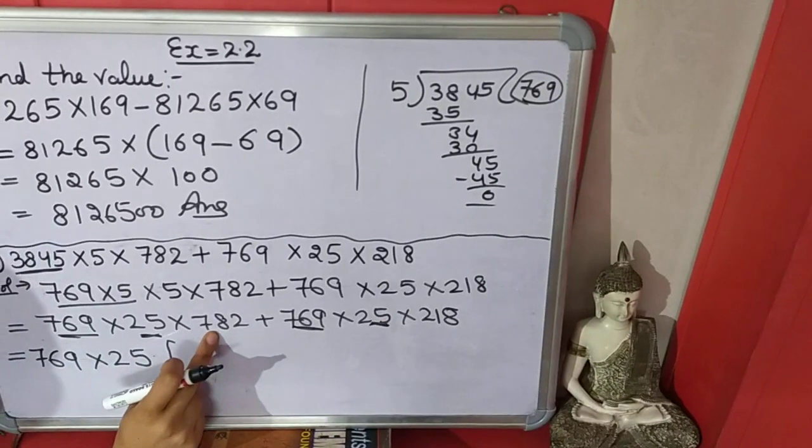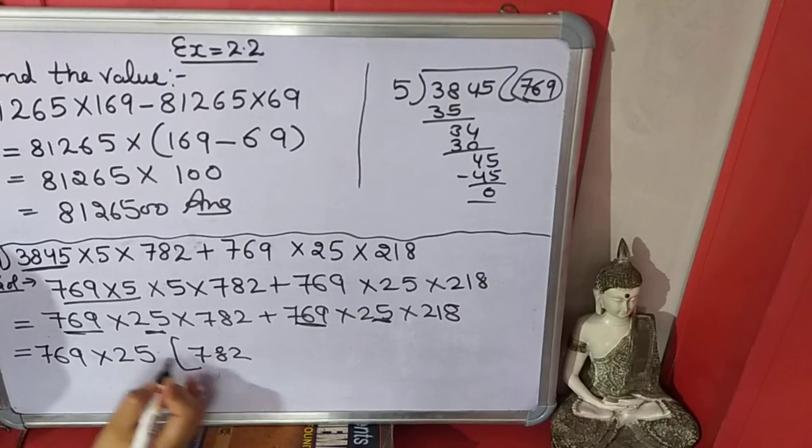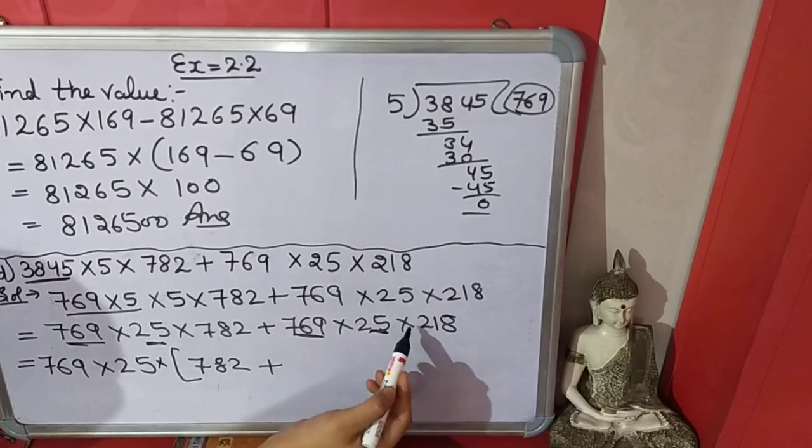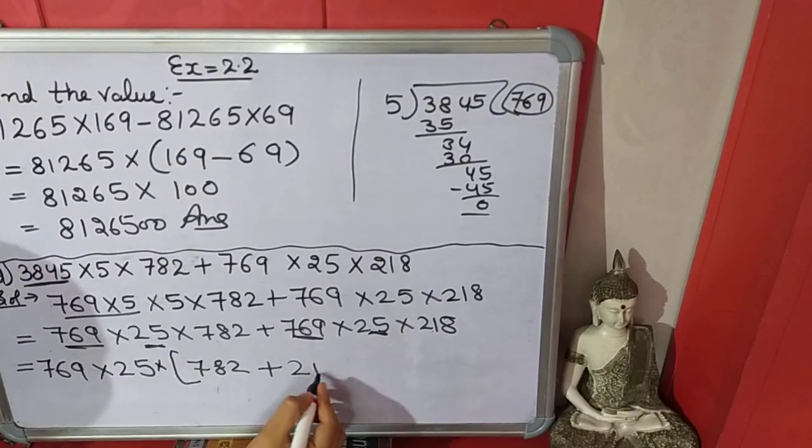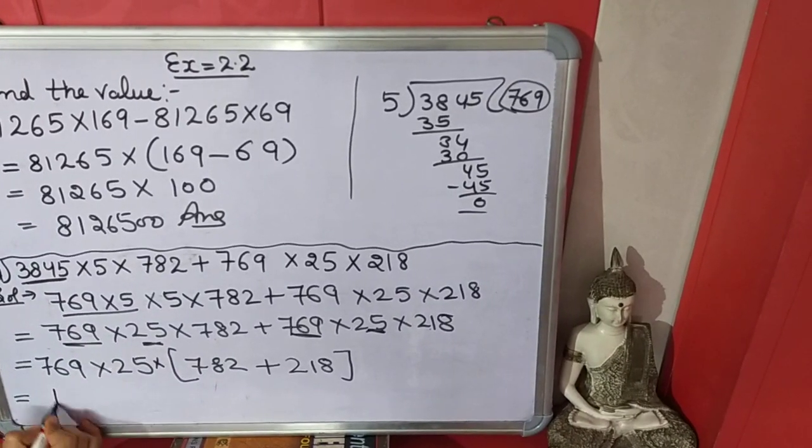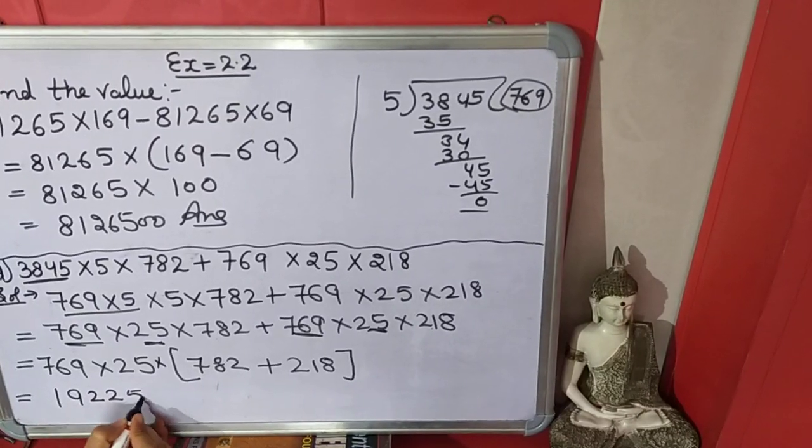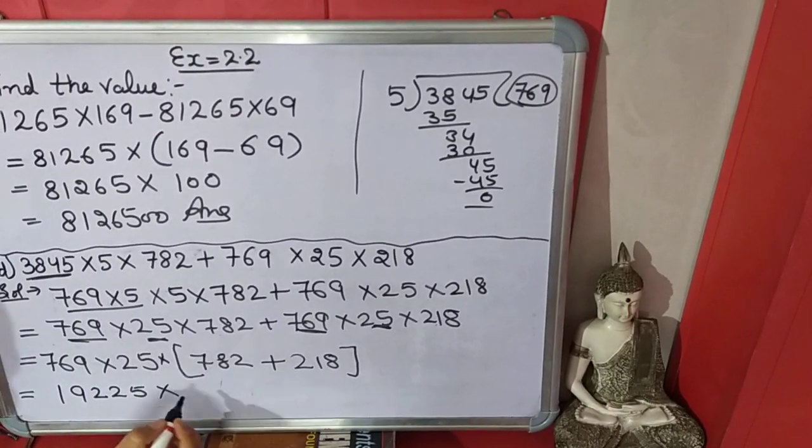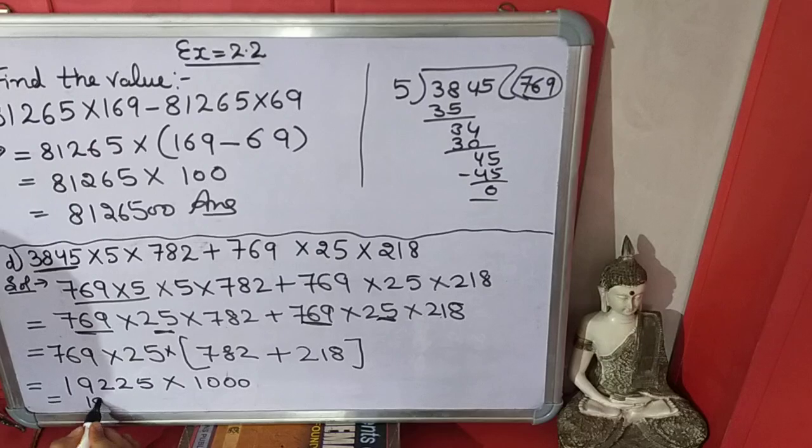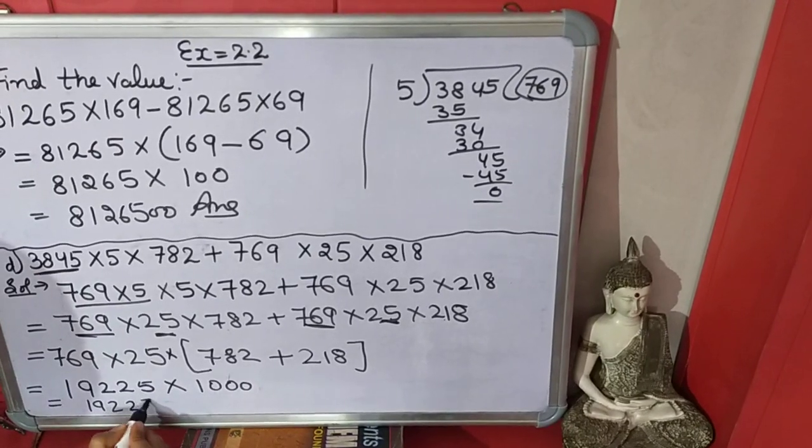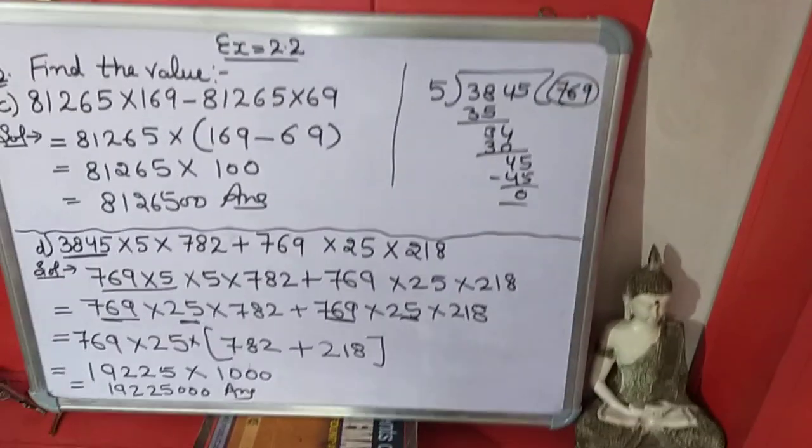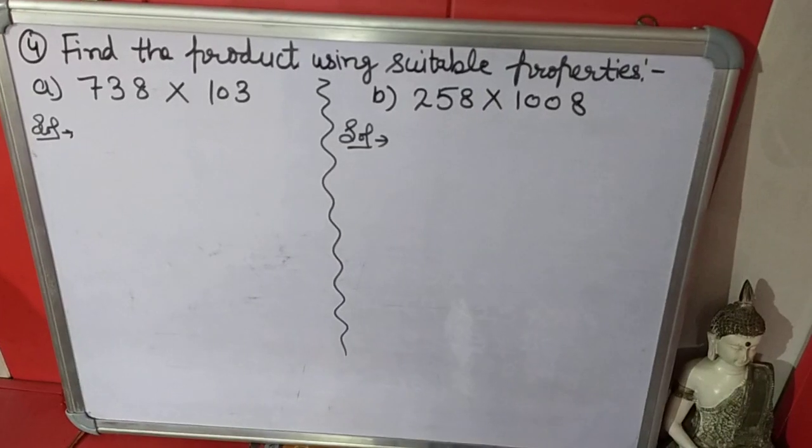What will be left here? 782 plus - these two are outside - 218 is left here. Now we will multiply these two numbers and we will add these two numbers. So answer will be 1 crore 92 lakh 25,000.